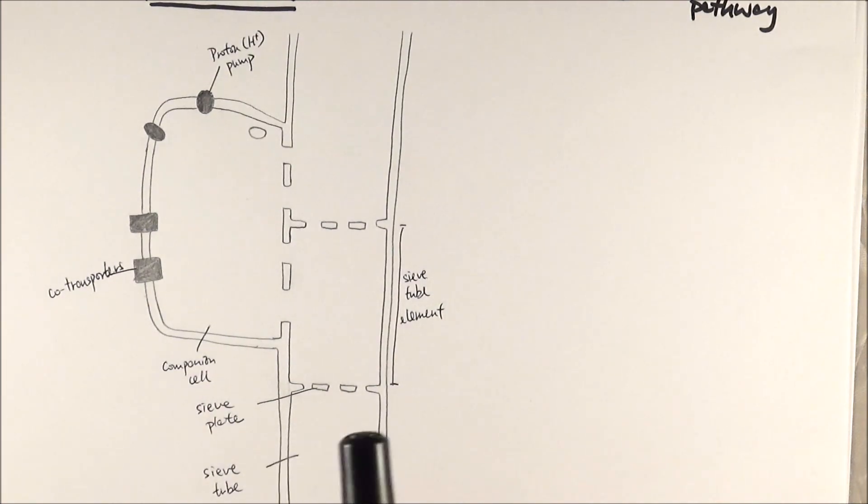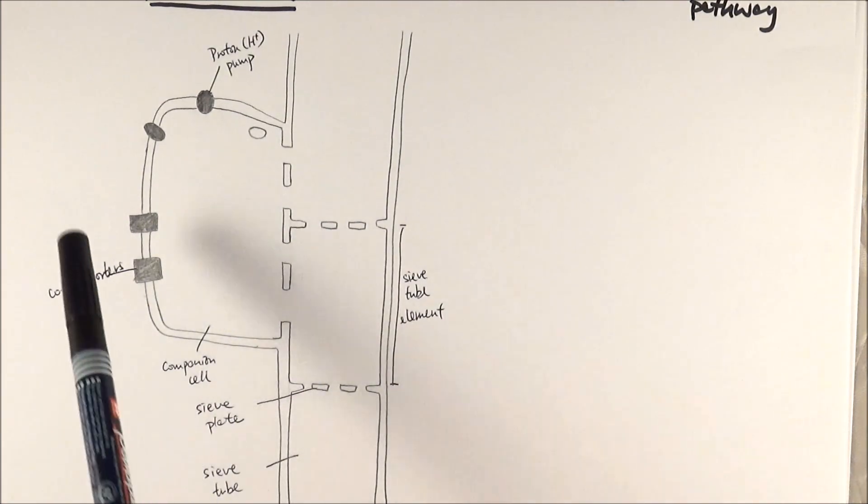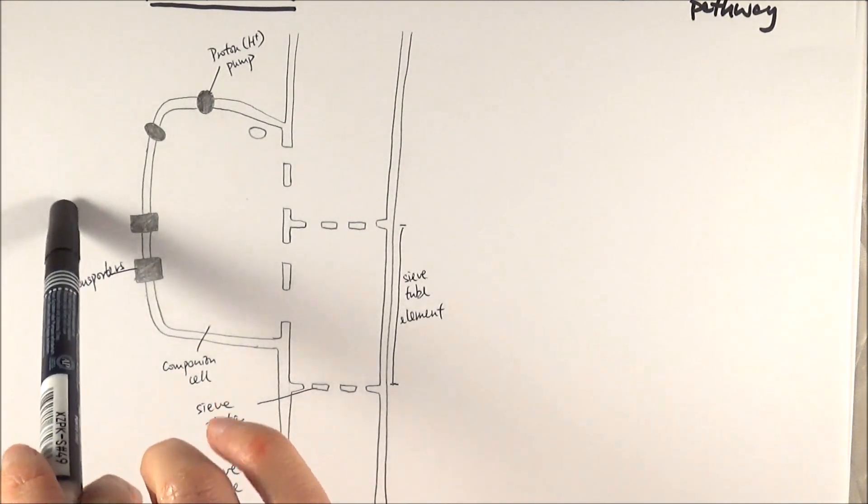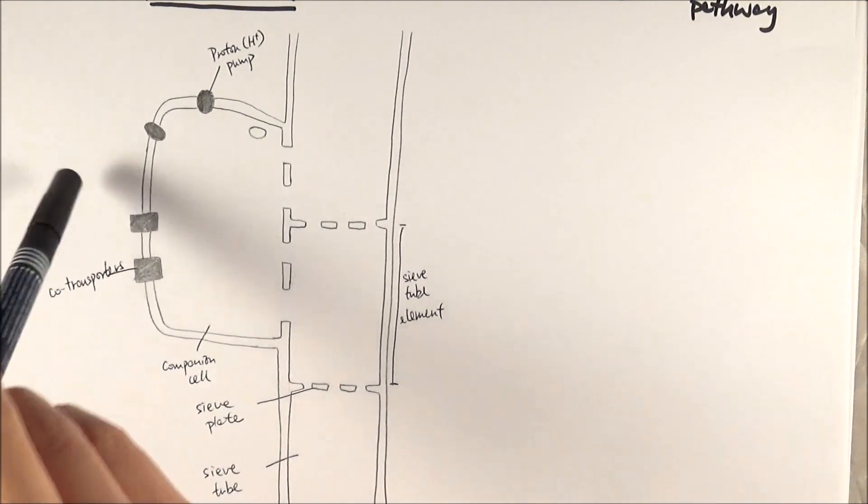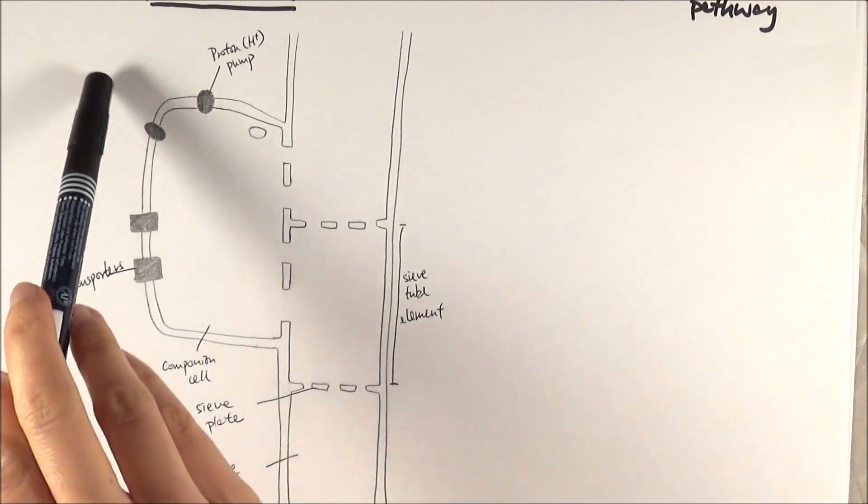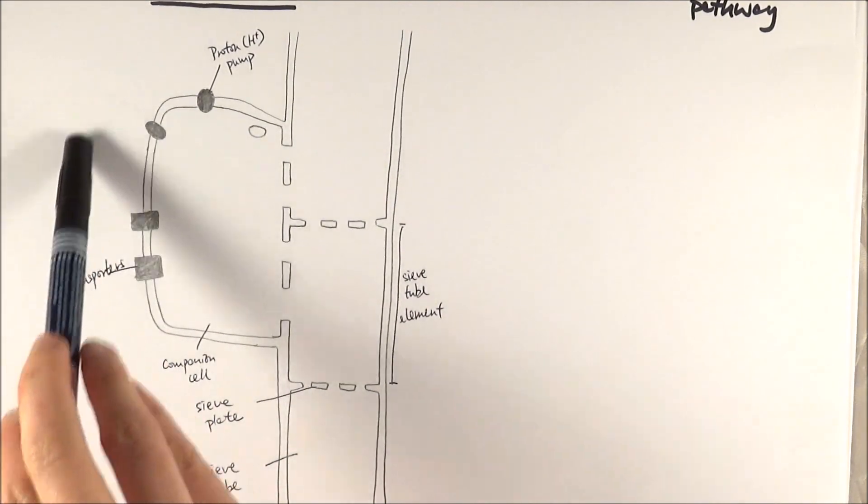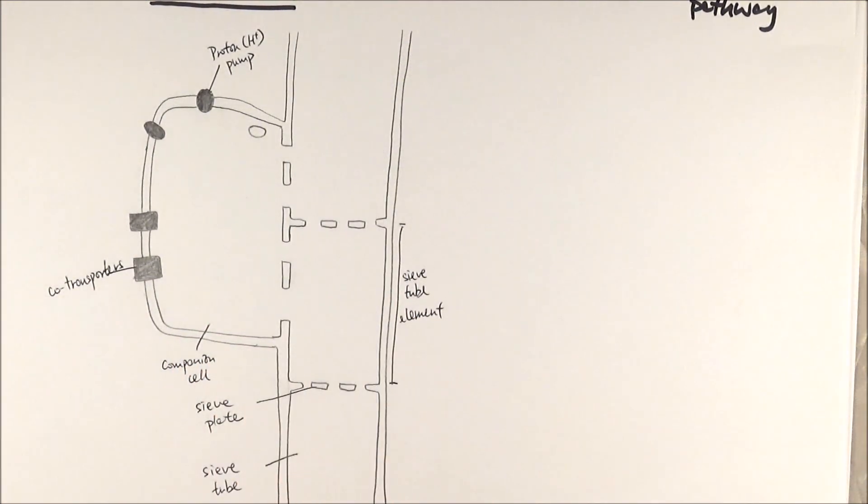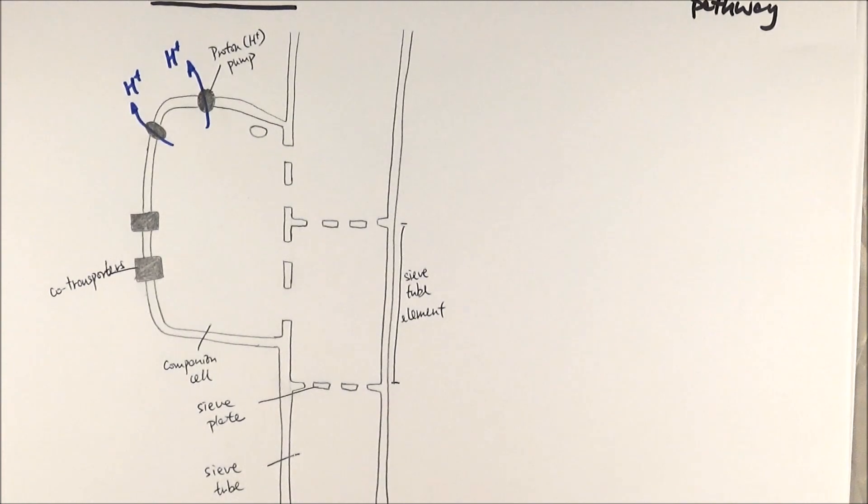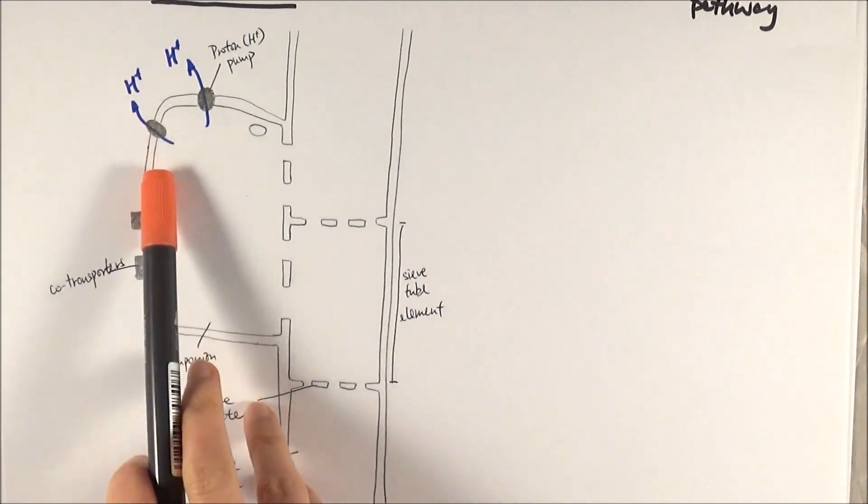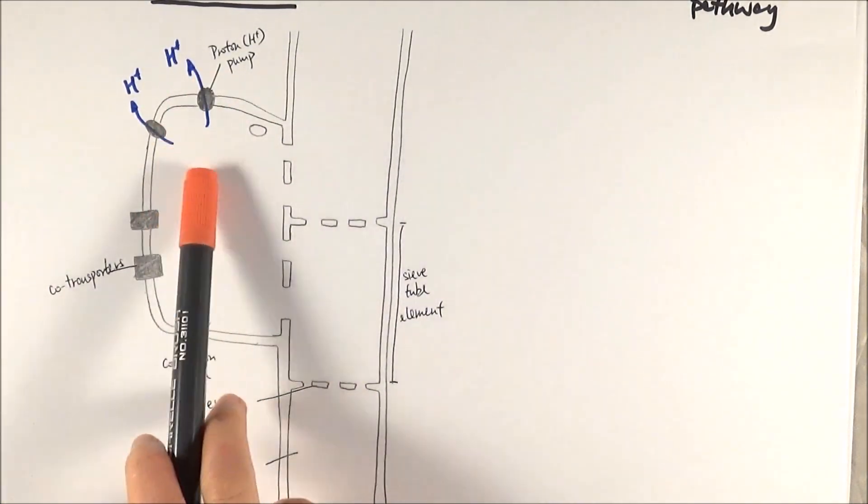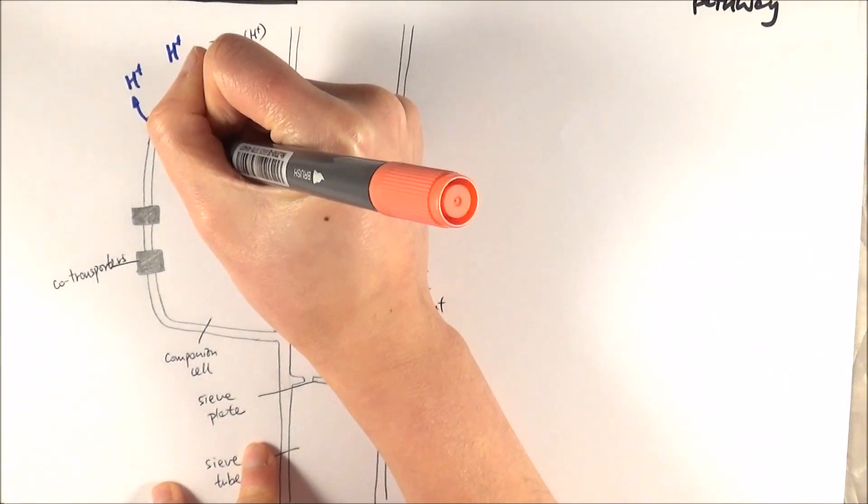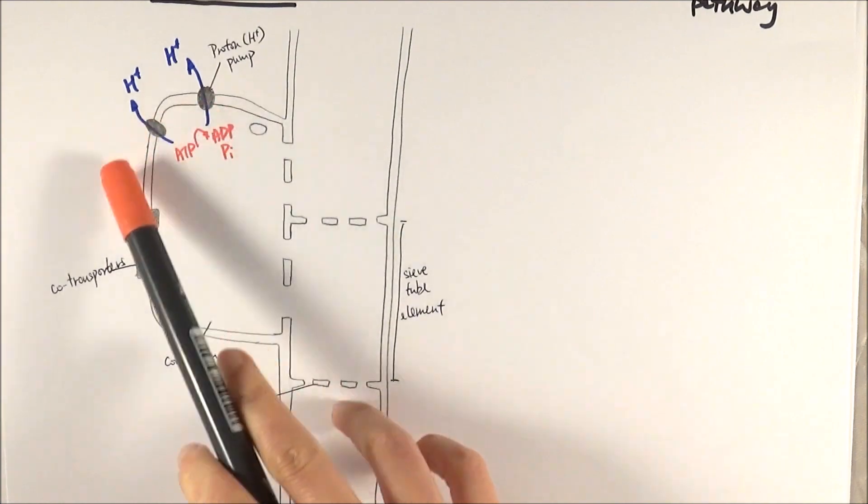Keep in mind this is what happens in the leaves. Imagine the palisade mesophyll cells have just done photosynthesis and made lots of sugar, which is converted into sucrose. We want to get the sucrose from this area into the phloem to be transported to different places. In the very beginning, protons are pumped through the proton pumps from the companion cell to the surrounding area. In this process, we use ATP, and this is active transport.